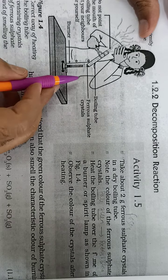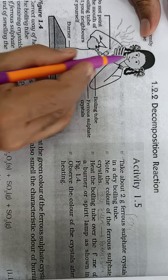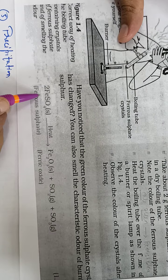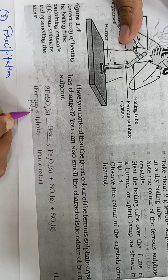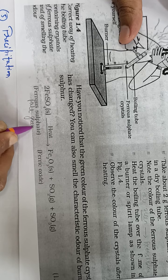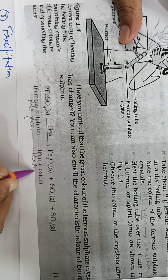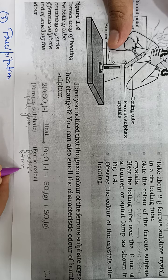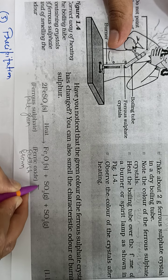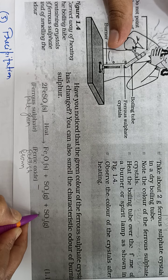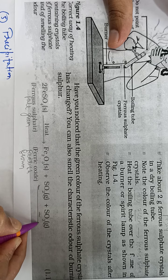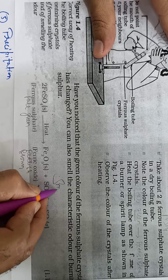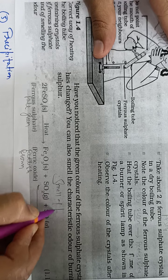We will see the reaction after heating. The crystals of ferrous sulphate change from pale green color to reddish brown ferric oxide, and also form sulphur dioxide and sulphur trioxide gas, and these gases give the smell of burning sulphur.